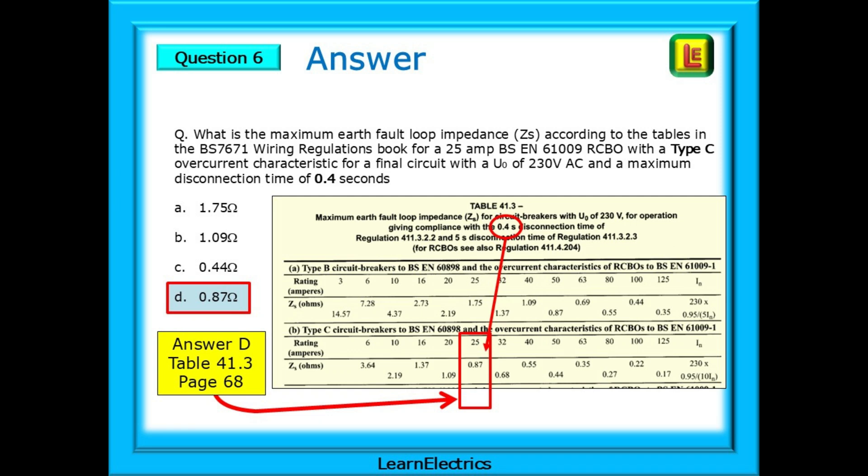Again, look in the index on page 583 for disconnection times final circuits and you will be directed to table 41.1. Since the question mentions tables, it is then just a matter of turning a page or two to find table 41.3 for circuit breakers and RCBOs.